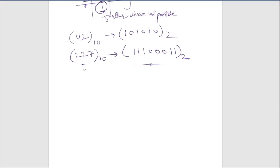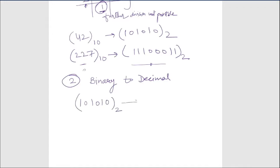It needs to be converted into decimal form, so we also need a method to convert binary to decimal. This is the reverse of the method we have done. We used the division method for decimal to binary, so we will use a multiplicative method to do the reverse conversion from binary to decimal.